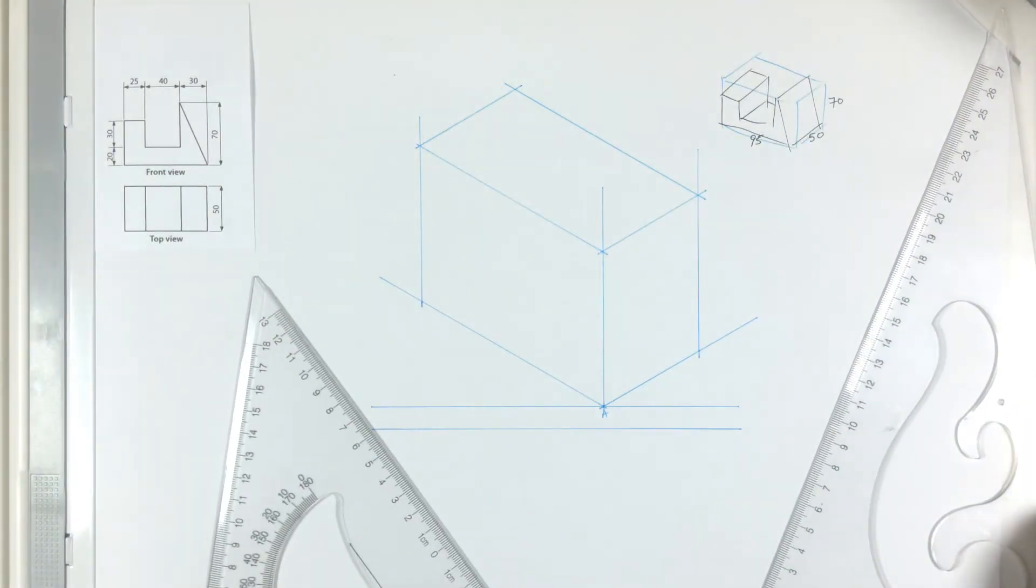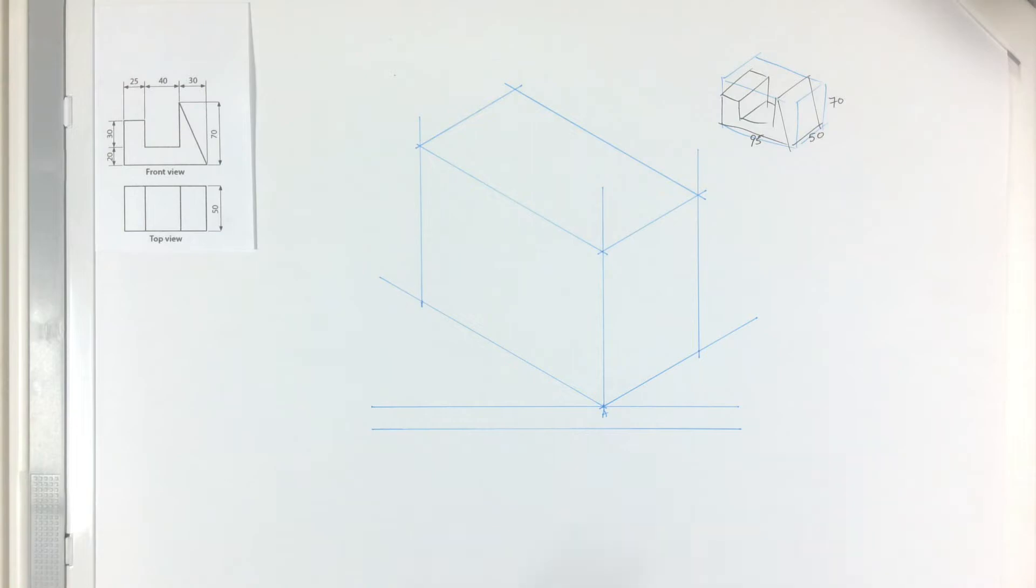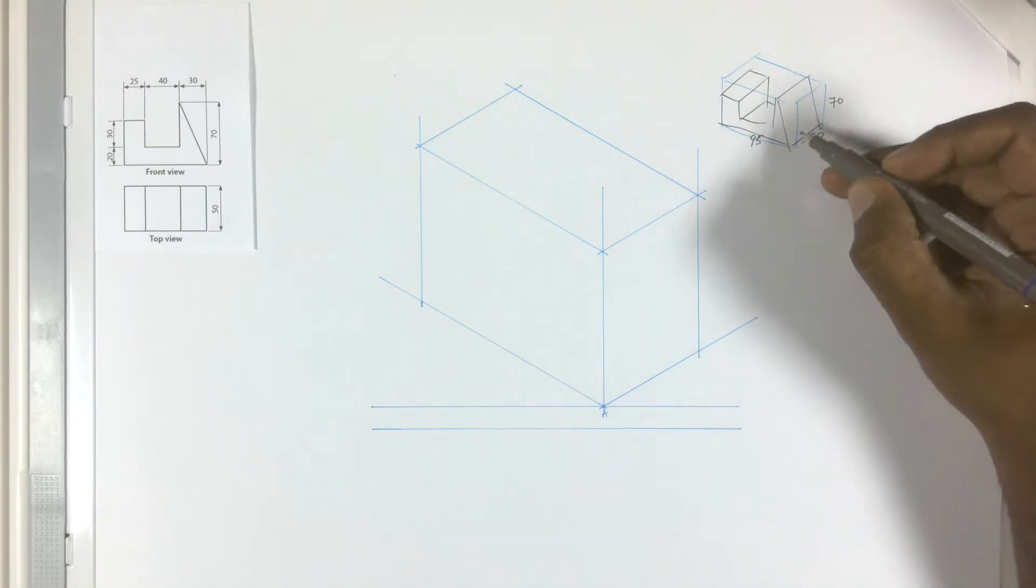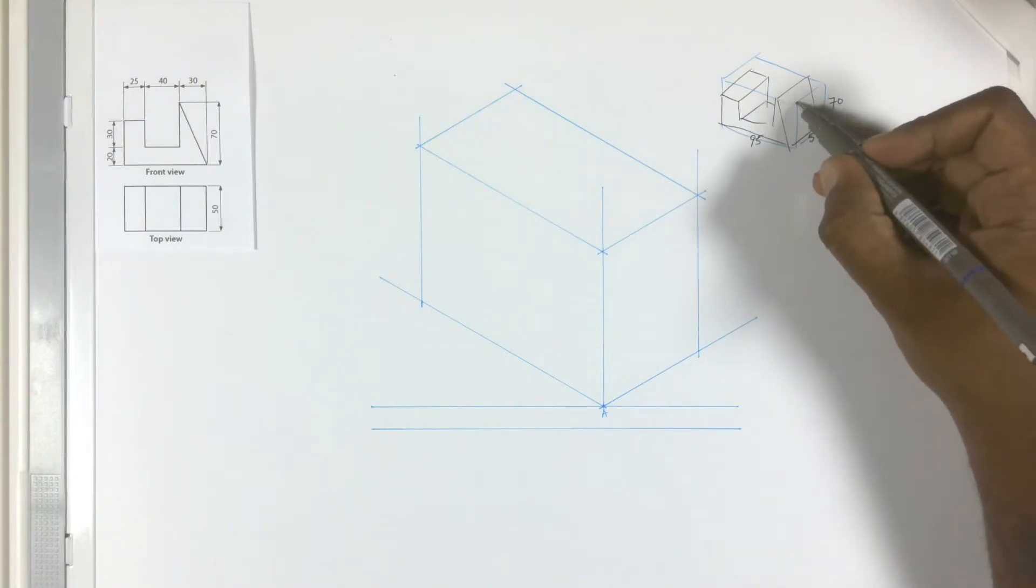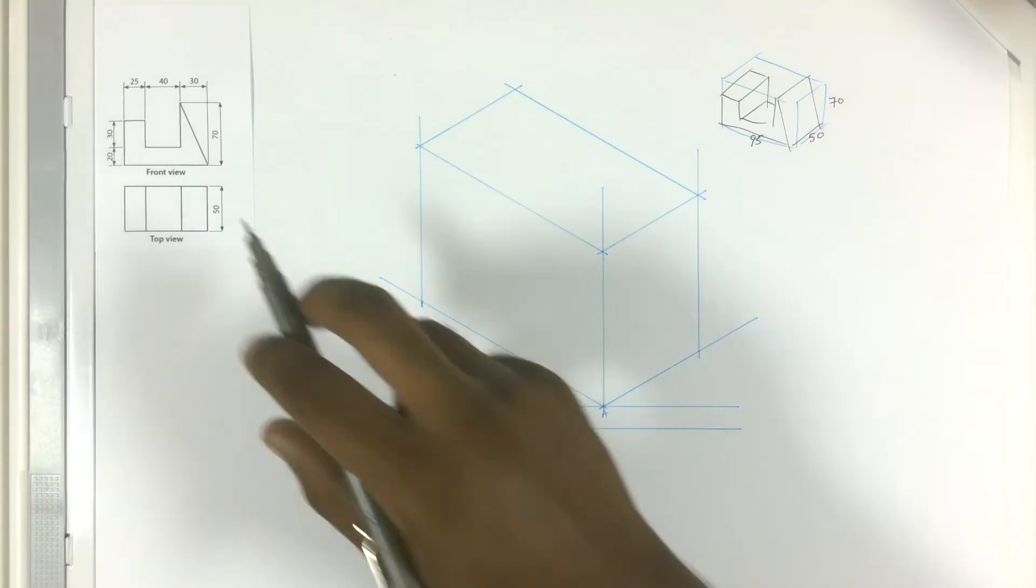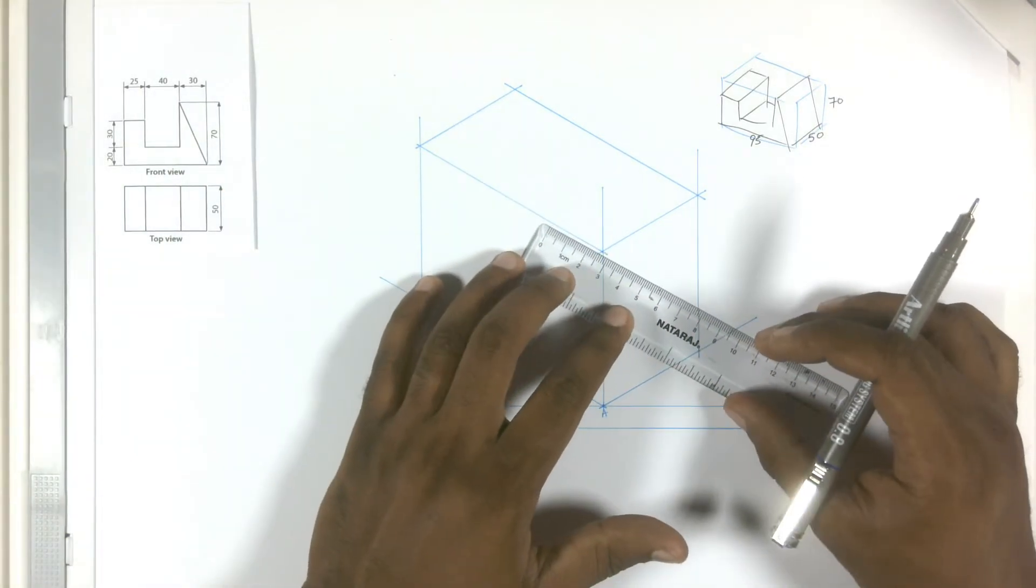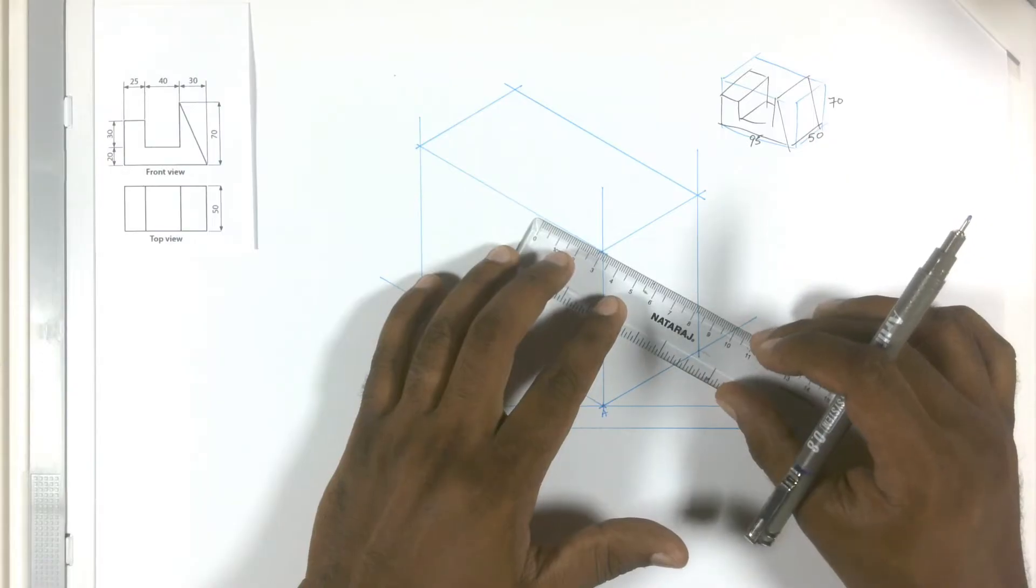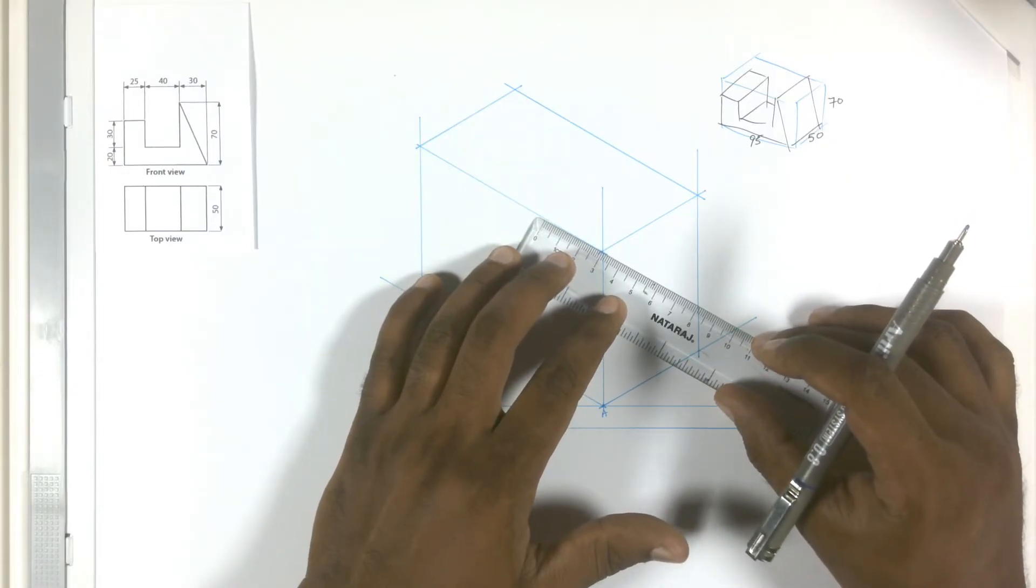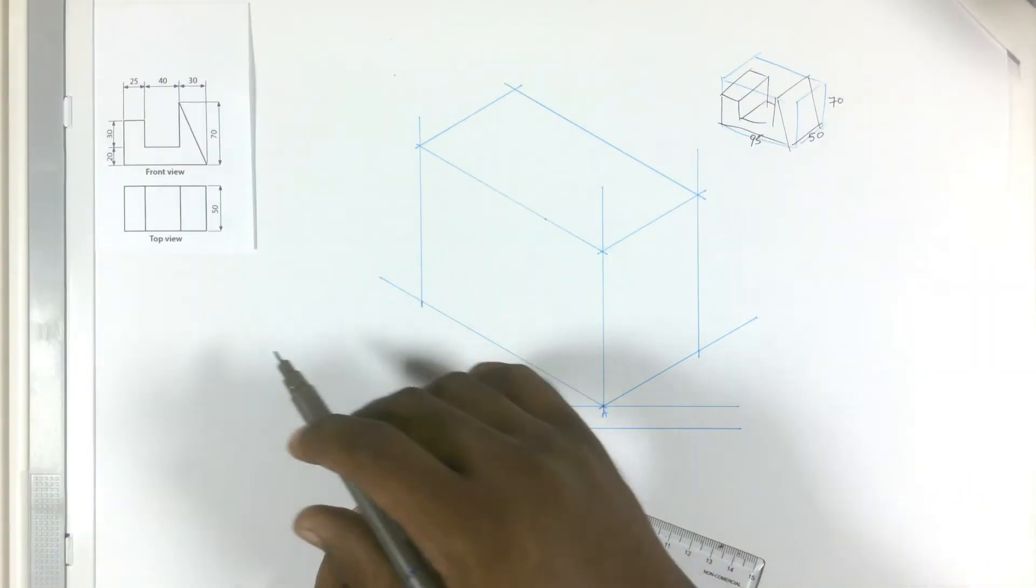Now that we have our crate, we can start drawing the front view. Let me add some markings on the crate so that we can work faster. First thing we need to draw this incline line. The distance from the crate to this point is 30, as you can see in this drawing. So let me mark out 30 using my ruler. 30 is same as 3 centimeters.